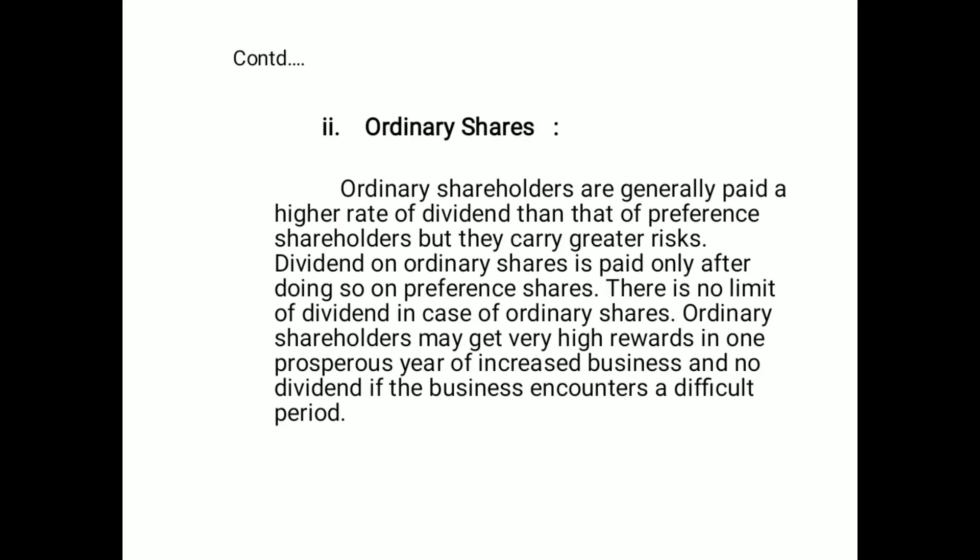The next type is ordinary shares. Ordinary shareholders are generally paid a higher rate of dividend than preference shareholders, but they carry greater risk. Dividend on ordinary shares is paid only after it is paid on preference shares. There is no fixed limit on dividend for ordinary shares — shareholders may get very high rewards in a prosperous year or no dividend during a difficult period.